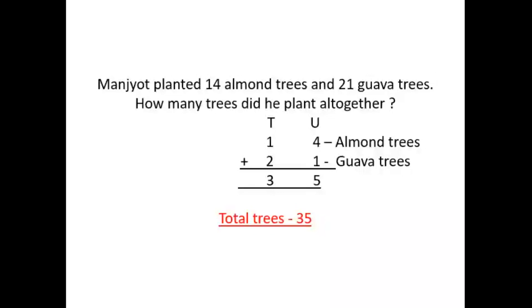Now come to the tens side: finger 1, mind 2. After 2 plus 1 is 3. So Manjok planted 35 trees in total.